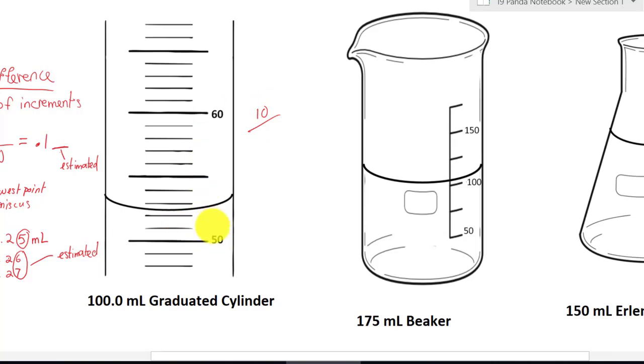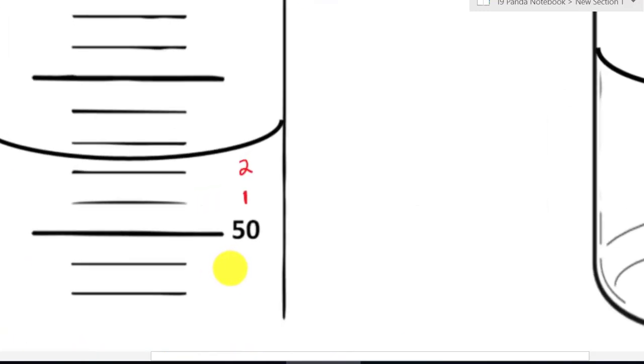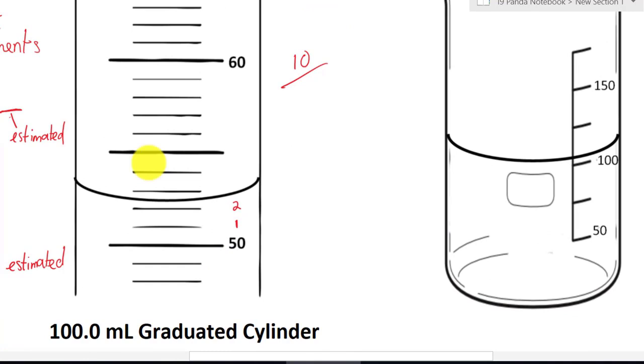60 minus 50 will give you 10 divided by your number of increments. So you have to count your increments from your 50 to your 60. That will be 1, 2, 3, 4, 5, 6, 7, 8, 9, 10. So it's going to take 10 increments. So 10 divided by 10 will give you 1.